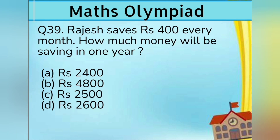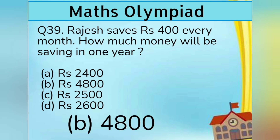Question 39. Rajesh saves Rs. 400 every month. How much money will he save in one year? Option A Rs. 2400, Option B Rs. 4800, Option C Rs. 2500, and Option D Rs. 2600. Answer is Option B Rs. 4800.